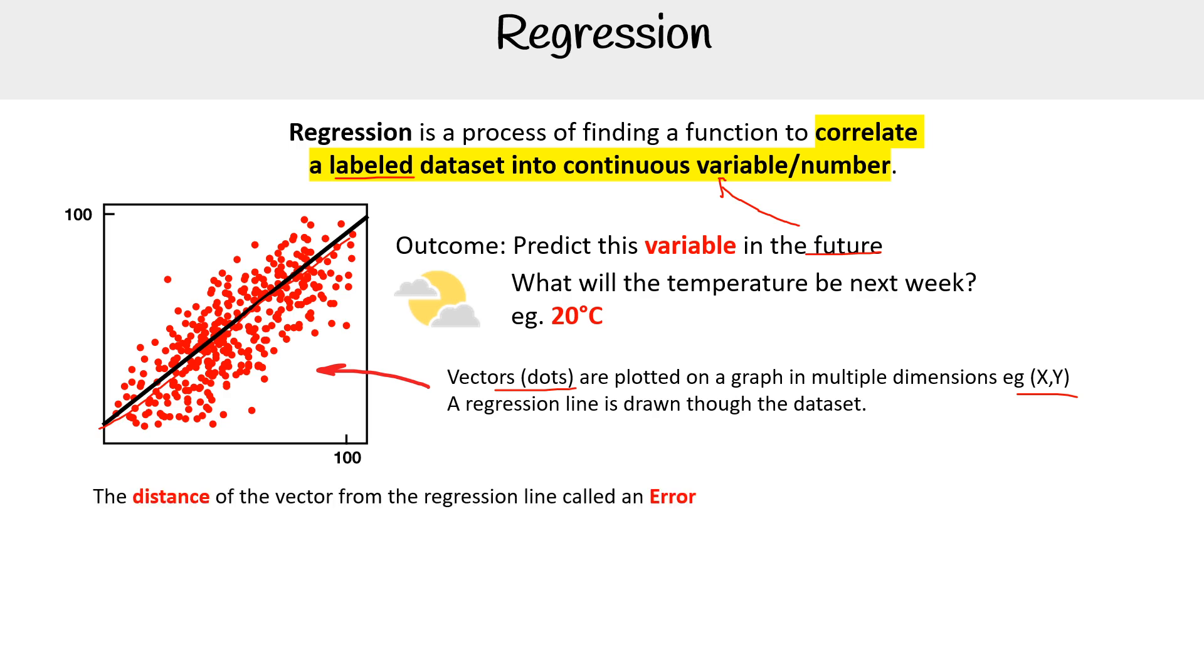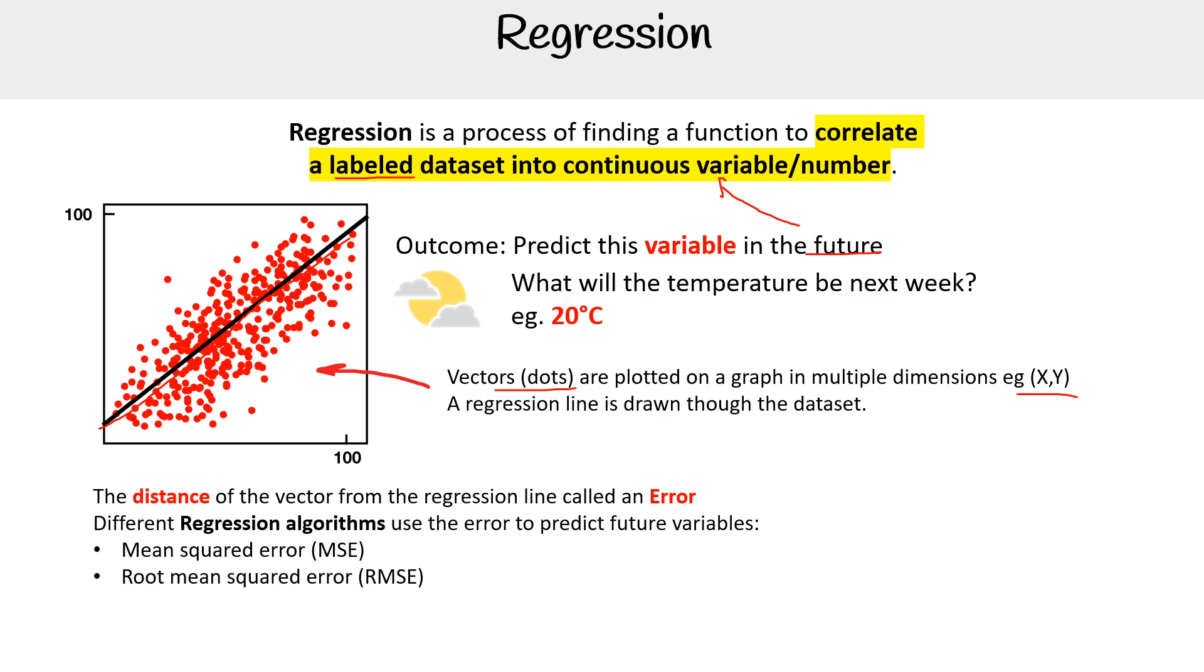How would we do that? We need to calculate the distance of a vector from the regression line, which is called an error. Different regression algorithms use the error to predict future variables.